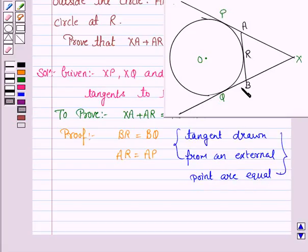So BR is the tangent drawn from B. Similarly, BQ is the tangent drawn from B, so BR is equal to BQ. And similarly, AP is equal to AR. Now similarly, XP is equal to XQ, again by the same reason.